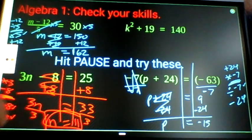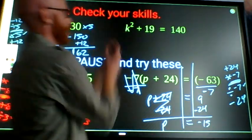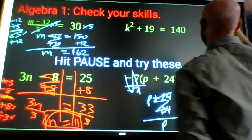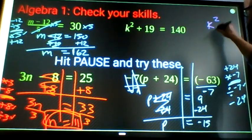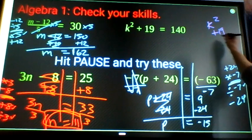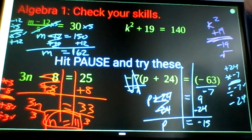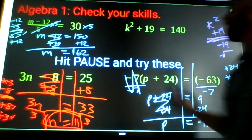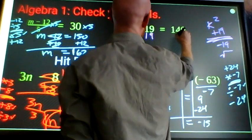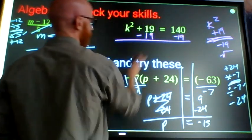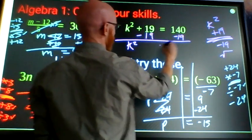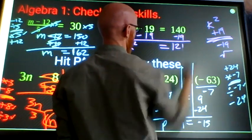One more, a tough one because it's got the square in it. What happens to k? First k gets squared, then 19 gets added to it. What am I going to do? Subtract 19 and then take the square root. So subtract 19: k squared equals 121.